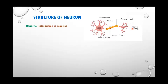The function of a dendrite is to acquire information from the receptors. These receptors are present in the sensory organs — nose, throat, tongue, and skin. There are different types of receptors in these organs. For example, gustatory receptors are present on the tongue to detect taste, and olfactory receptors are present in the nose to detect smell.